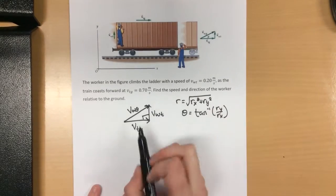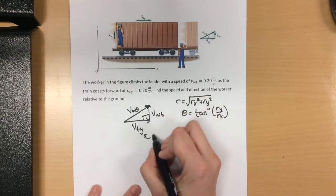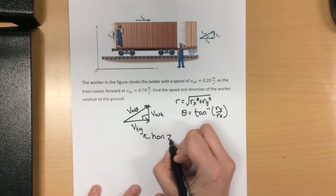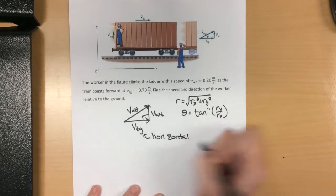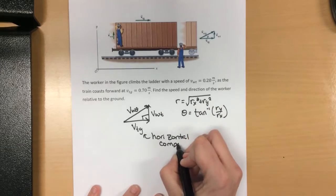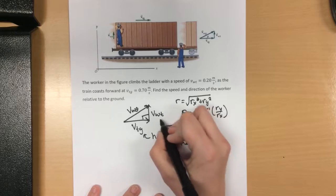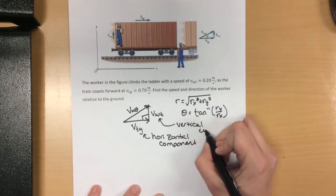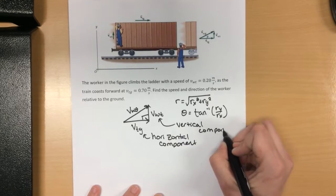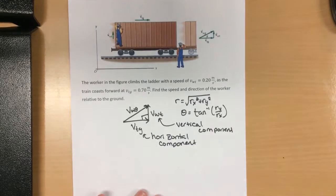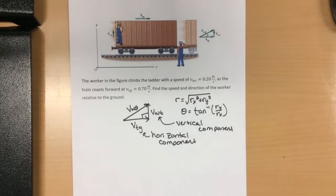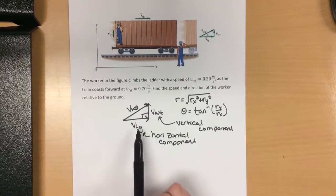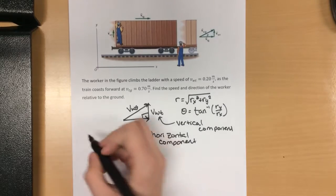My horizontal component, or my x component, is this one here. This one is my vertical component. Remember, horizontal is our x-direction, our x-dimension, while vertical is our y-direction and our y-dimension. So this is my x, this is my y.